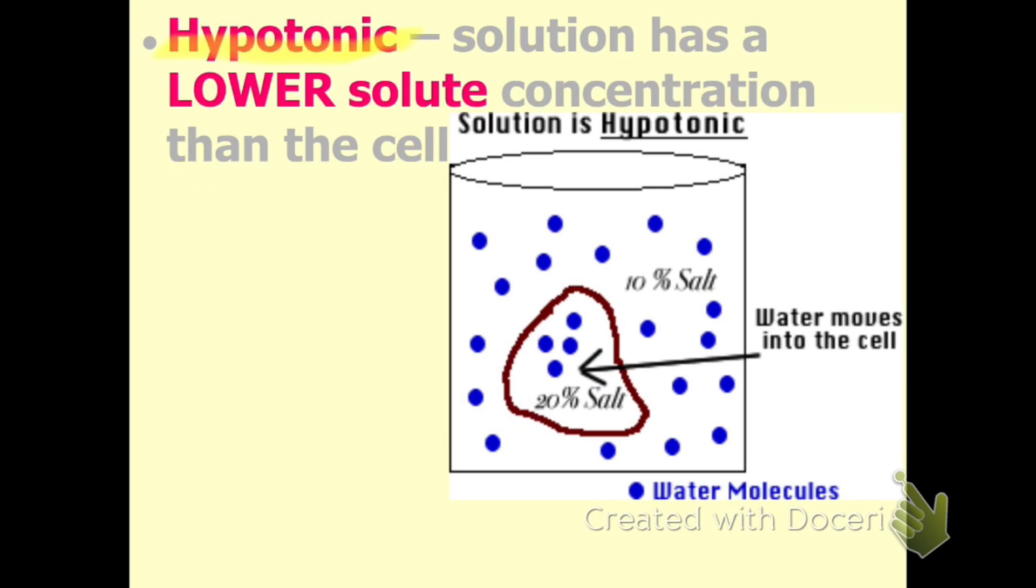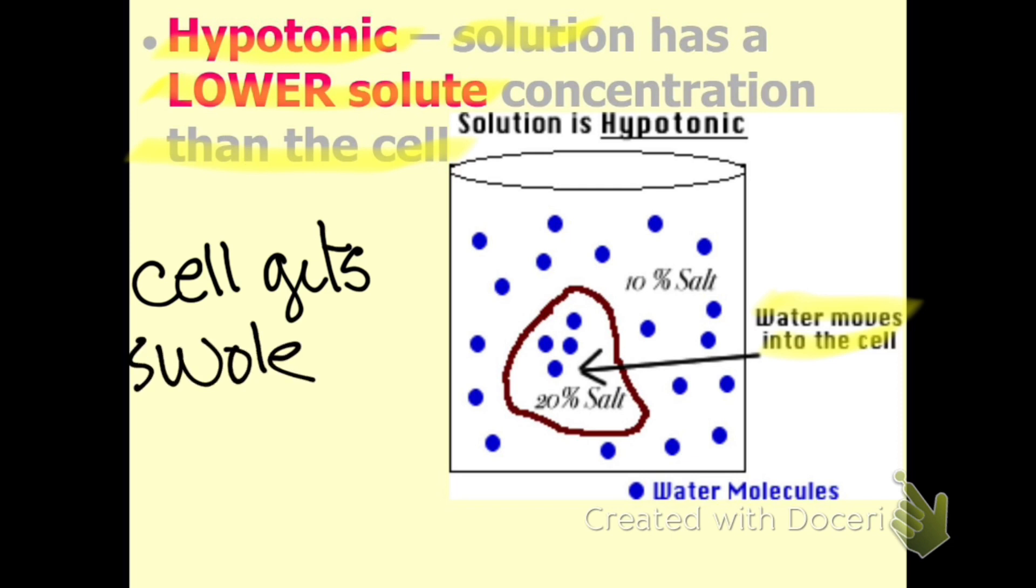The next one is hypotonic. Solution lower solute than the cell. Because of that, water is going to move into the cell. So now what is this cell going to do? The last one shrunk, what's this one going to do? It's going to get bigger. So cell gets swole.